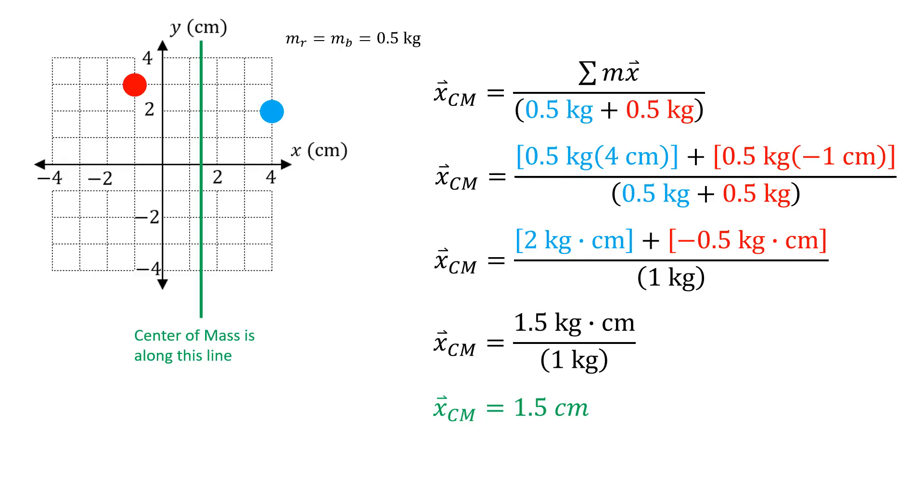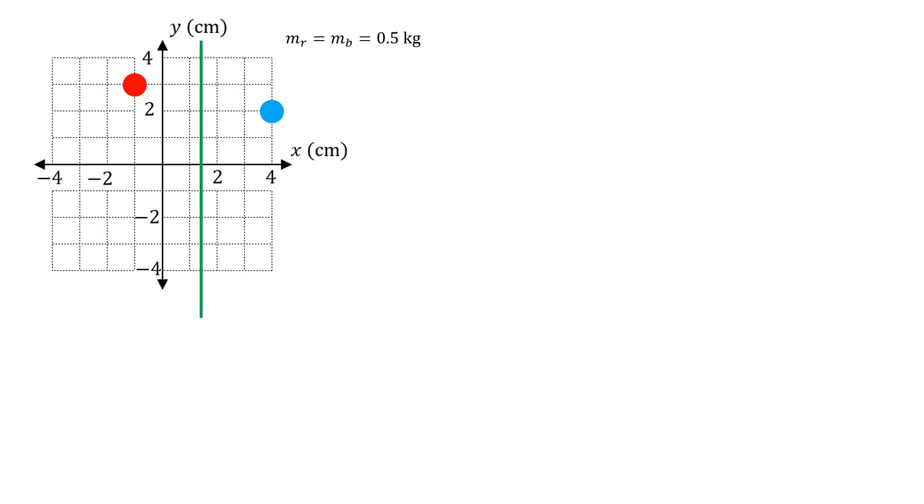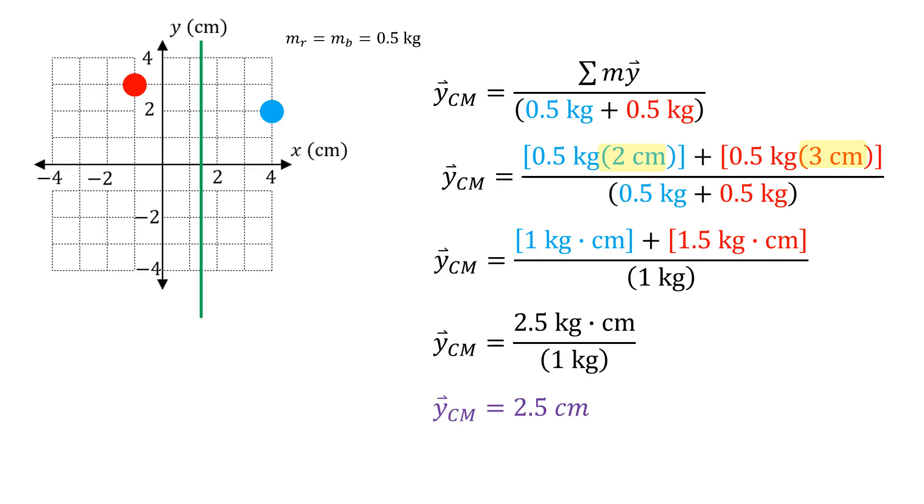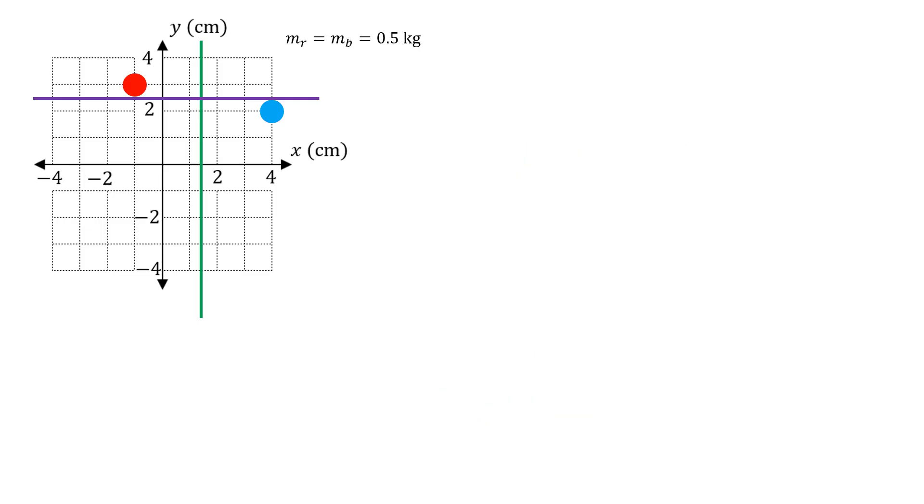Just repeat for the y coordinate. Instead of using the x values, just use the y values. Same initial substitution, the denominator is still going to be one kilogram because the mass of the system is the same in both axes. This time I'm going to replace the x coordinates with the y coordinates. For the blue object, I'm going to use a y value of 2 centimeters. For the red, I'm going to use a y value of 3 centimeters. Pulling the crank on the math handle, that's going to give me 2.5 over 1 for a value of 2.5 centimeters.